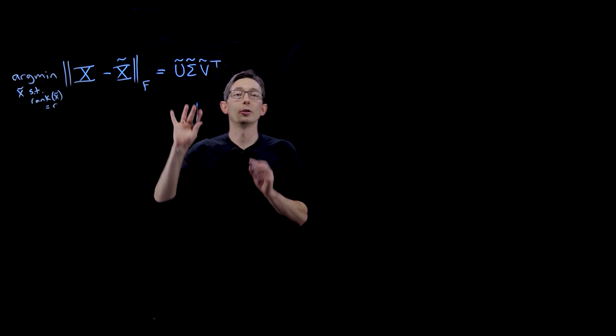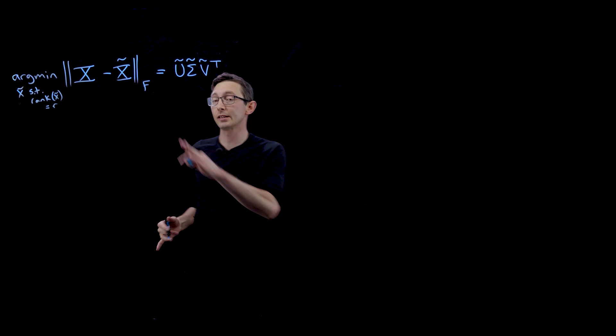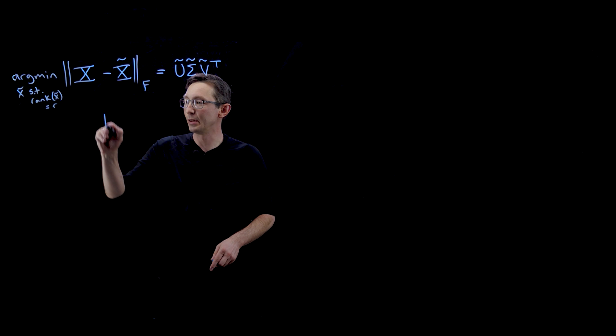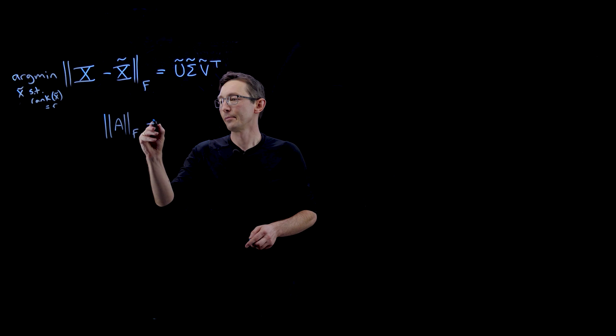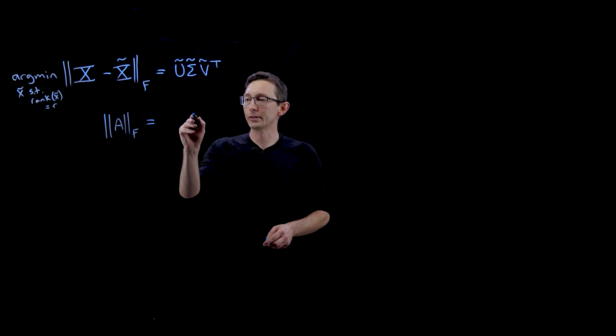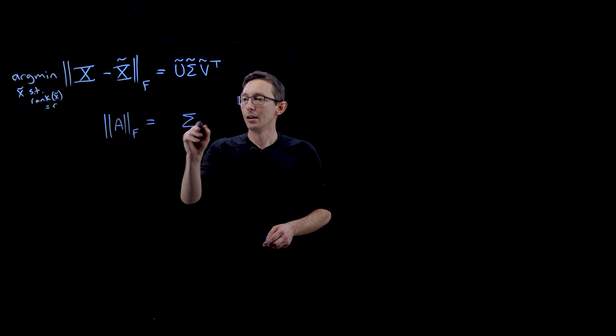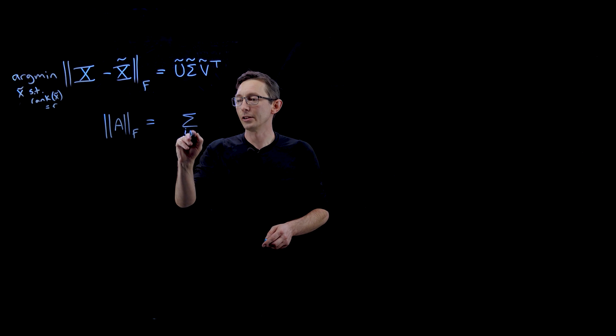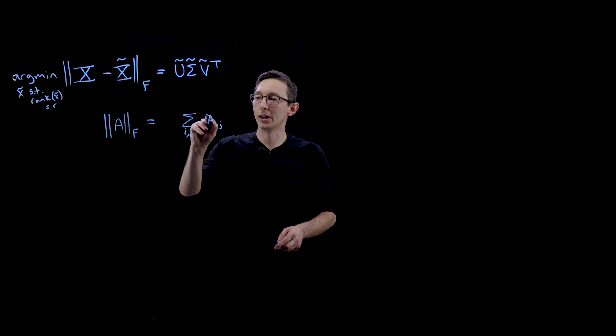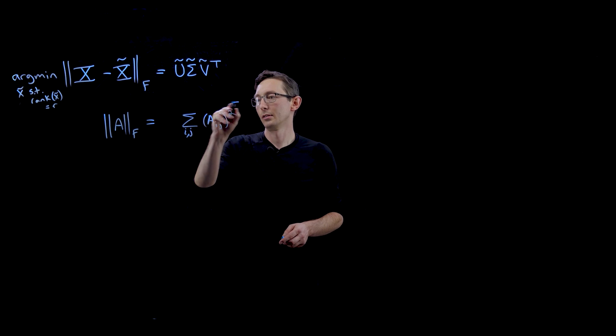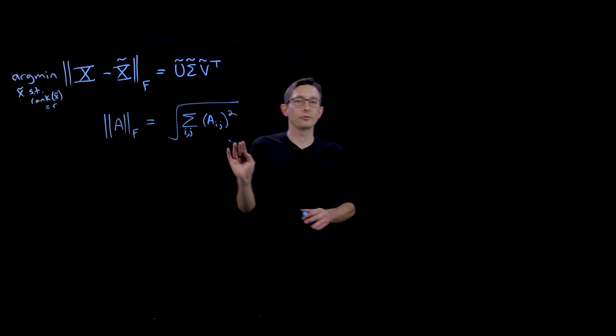But I forgot to tell you what the Frobenius norm is. So the Frobenius norm is really simple. If I take the Frobenius norm of a matrix A, essentially what that is is the square root of the sum over all i and j of A_ij squared. That's the Frobenius norm.